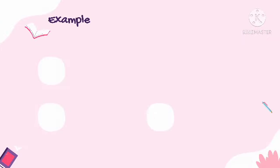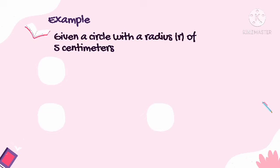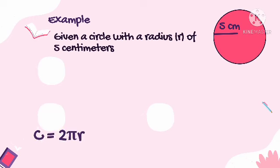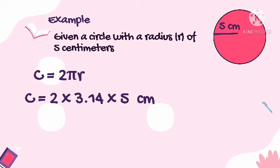For a better understanding, let's look at an example. Given a circle with a radius of 5 centimeters, we need to find the circumference. Since the radius is given, we will use the formula C = 2πR. Substituting the given values: C = 2 × 3.14 × 5 centimeters. Multiplying these together, the circumference of the circle with a radius of 5 centimeters is 31.4 centimeters.